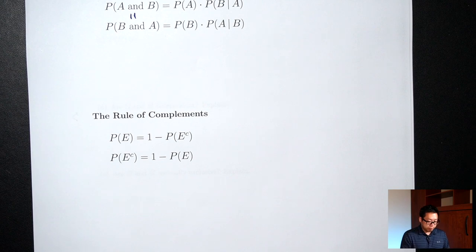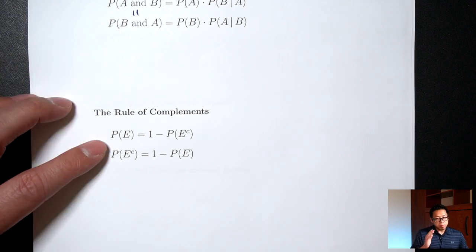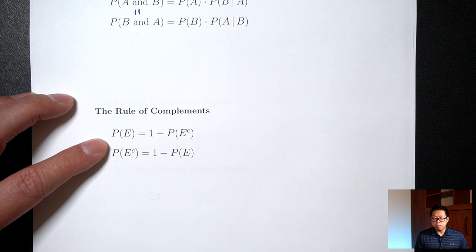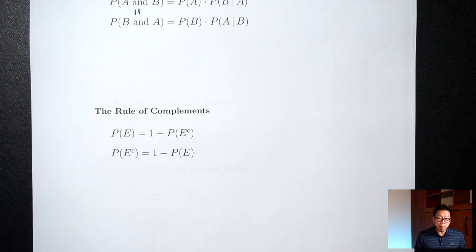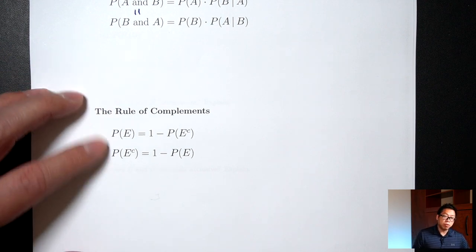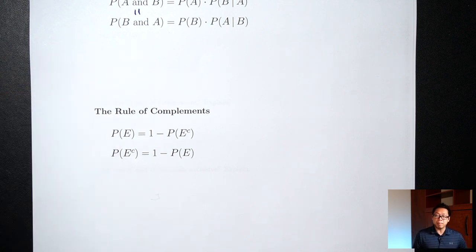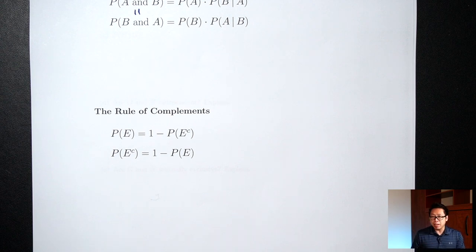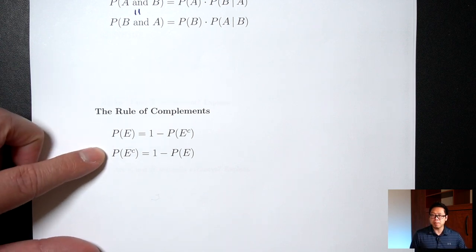The last set of formulas we'll need is called the rule of complements. If E represents 'it rains today,' the complement — just add on the word 'not' — means 'it does not rain today.' These two formulas are saying that if you know one of them, do one minus and you'll get the other one. That's all these two are saying.